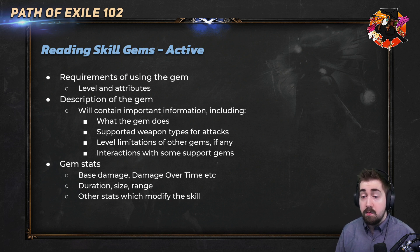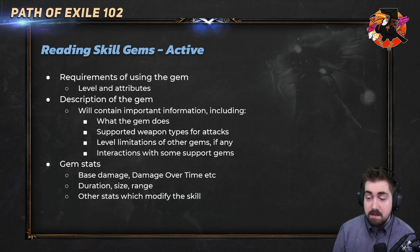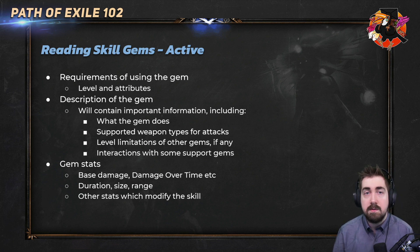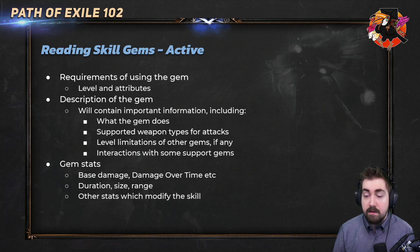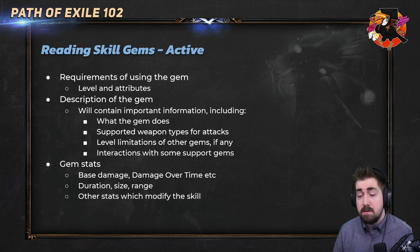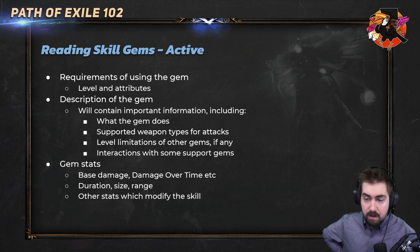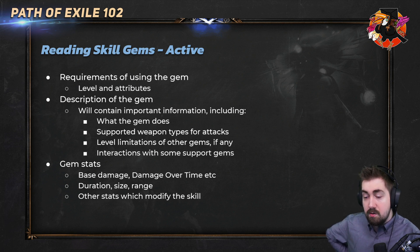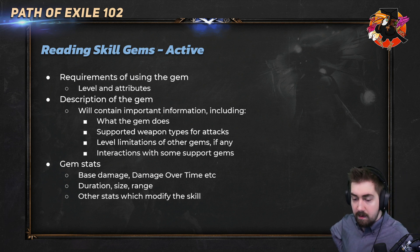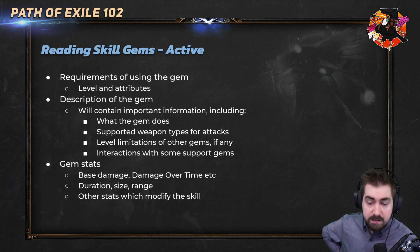The gem description contains important information — it'll tell you what the gem does, supported weapon types (some weapon skills can only be used with swords, axes, etc.), level limitations of other gems, things you won't be able to use with trigger gems, and interactions with support gems. Also important: you can see the tags change when you put a support gem in. If you remove it, you'll see letters disappearing from the tag list. If a support gem isn't adding a letter to the tag display, that generally means it doesn't work.